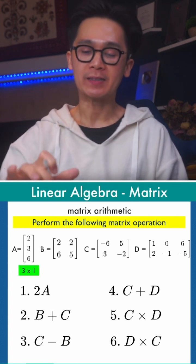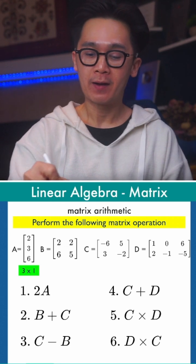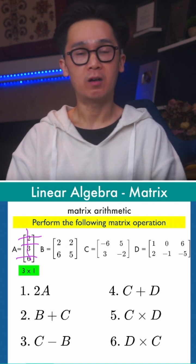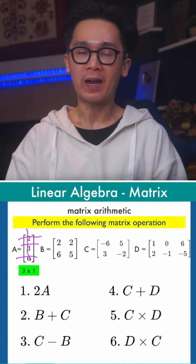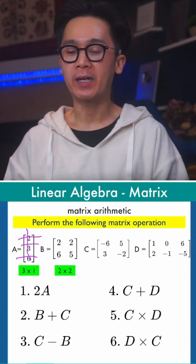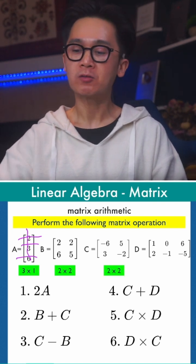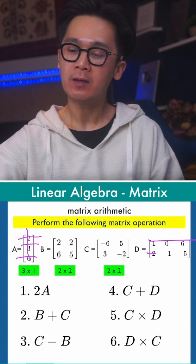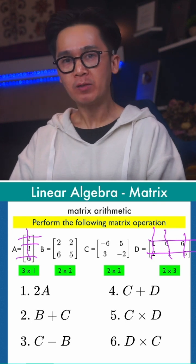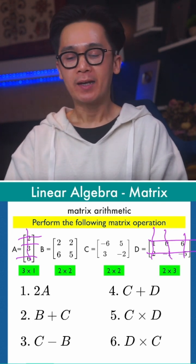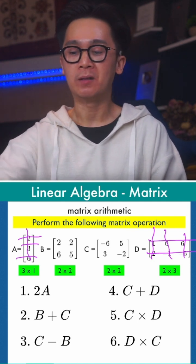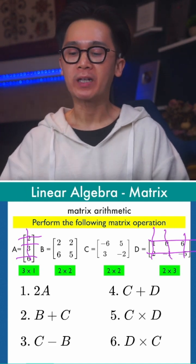For matrix A, this is an example of a three by one matrix because we have three rows and one column. Make sure that you remember that the order or dimension of the matrix is not commutative — it needs to be row and then column. So matrix B is a two by two, matrix C is a two by two, and matrix D, which has two rows and three columns, is a two by three matrix. You need to know the order of each matrix because you won't be able to perform some arithmetic operations based on the rules we're going to be working on today.